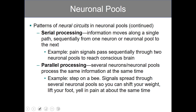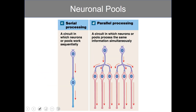Parallel processing is when several neurons or neuronal pools process the same information at the same time. In serial processing, one neuron leads to the second, leading to the third, until they reach their destination. Parallel processing starts with a bit of divergence where one neuron synapses with multiple, but then serial processing follows afterwards.